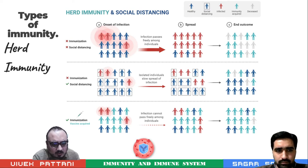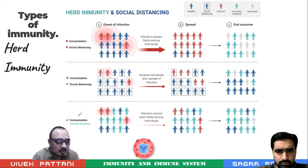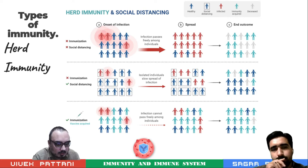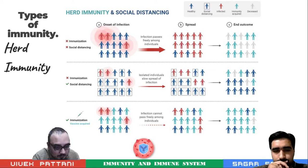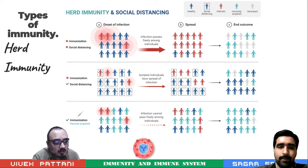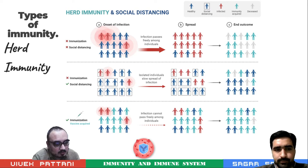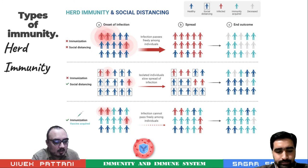There are various factors which contribute to creating herd immunity. Some examples are immunization programs, type of population, and further study regarding herd immunity can also enhance it.